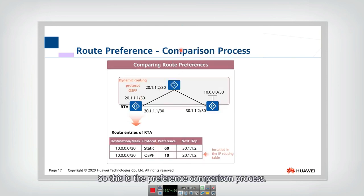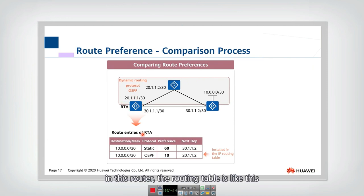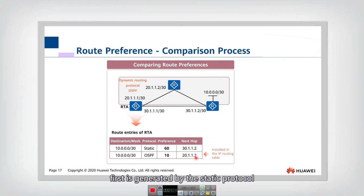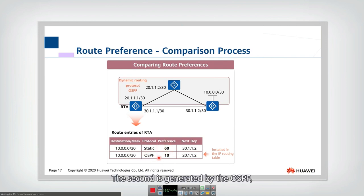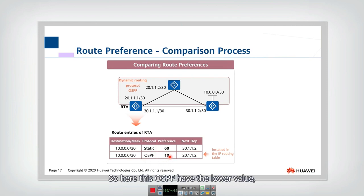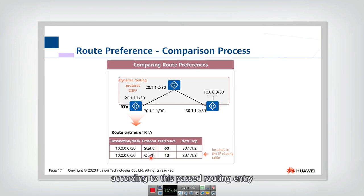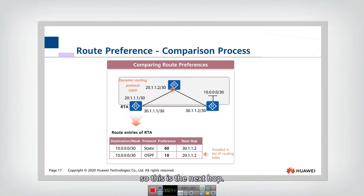For example, in this router the routing table has two different entries for the same destination. The first is generated by the static protocol with a preference of 60. The second is generated by OSPF, which has a preference of 10. Since OSPF has the lower value, it has the higher preference. So the router will forward the packet according to the OSPF routing entry, forwarding to that next hop.